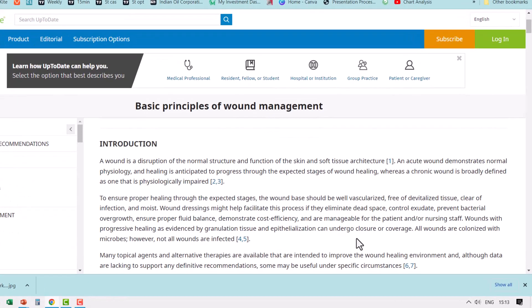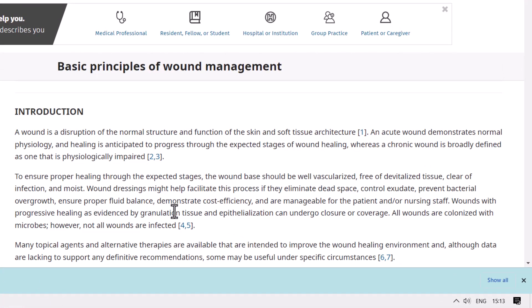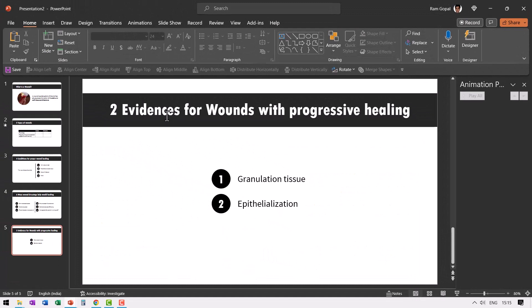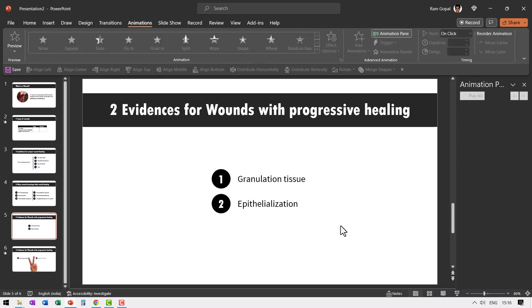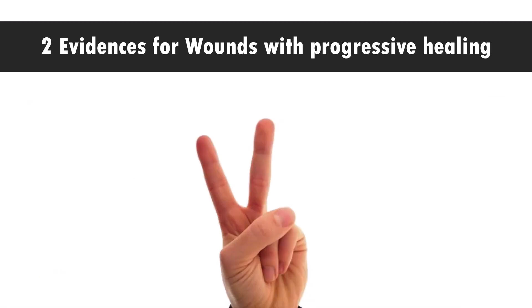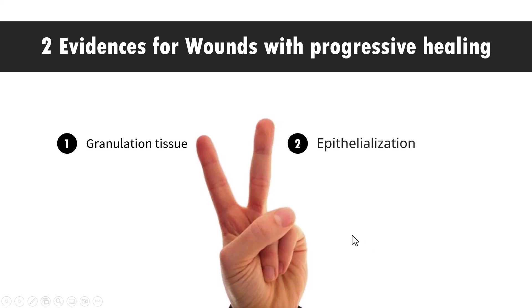Let us go back to the information. It says wounds with progressive healing as evidenced by granulation tissue and epithelialization can undergo closure or coverage. So there are two evidences for progressive healing: granulation tissue and epithelialization. Following the same process I would write the title as 'two evidences for wounds with progressive healing.' Instead of showing this information in a plain way, I can take one of the templates from our medical bundle and make a slide — wounds showing these two evidences can undergo closure or coverage.